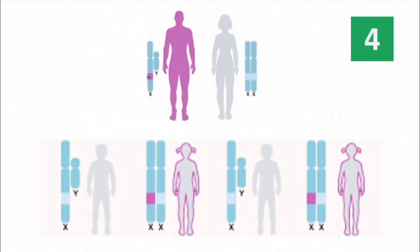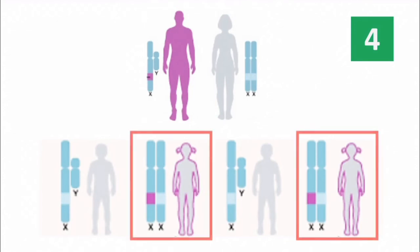Again, daughters inherit two copies of X chromosome, one from father and one from mother. So, the daughters inheriting defective gene from the father will be carrier.